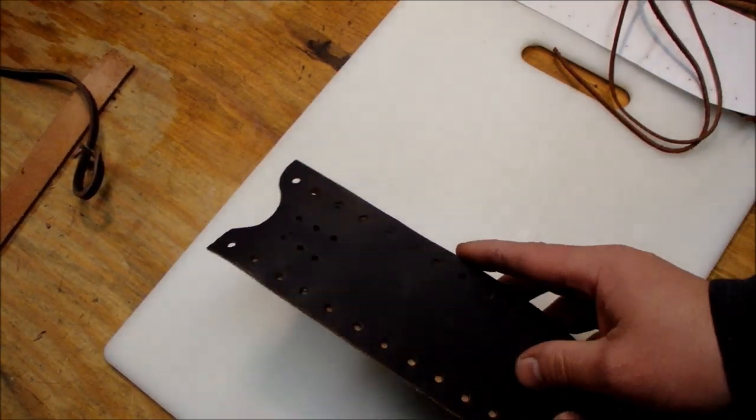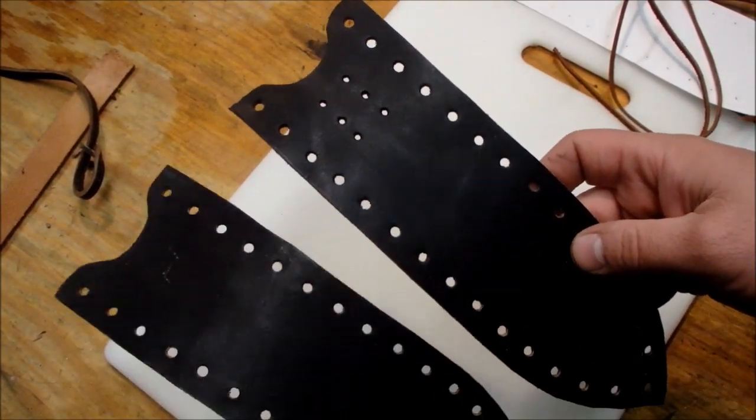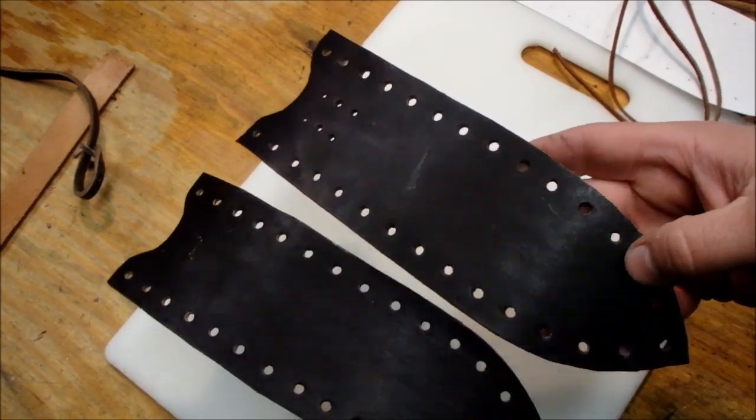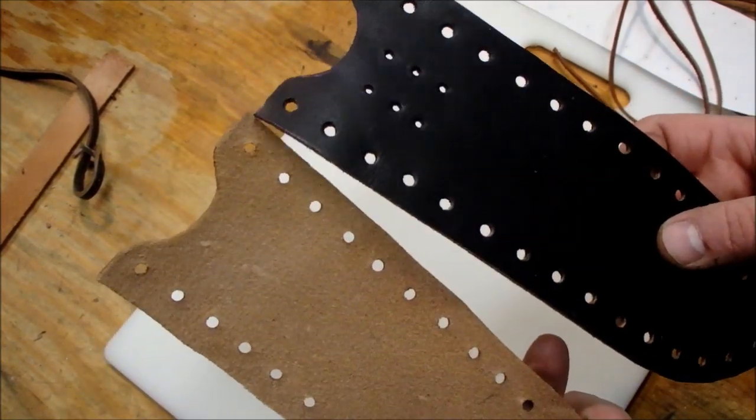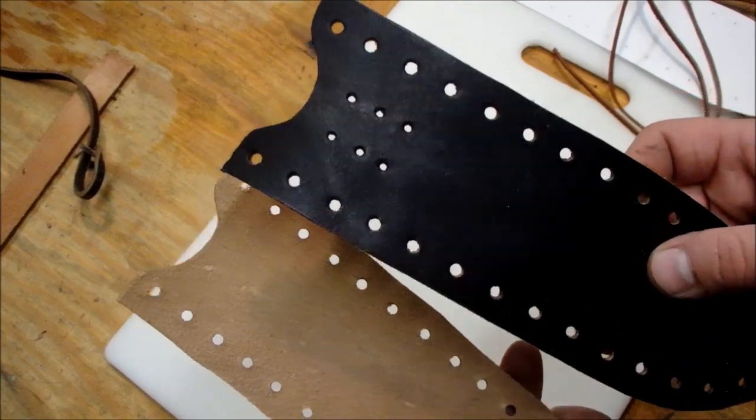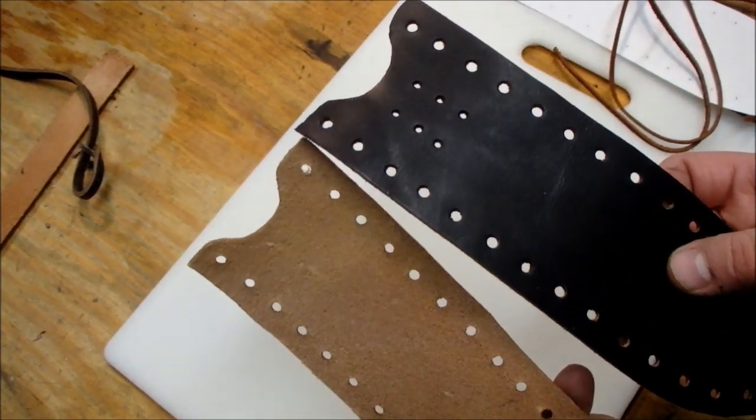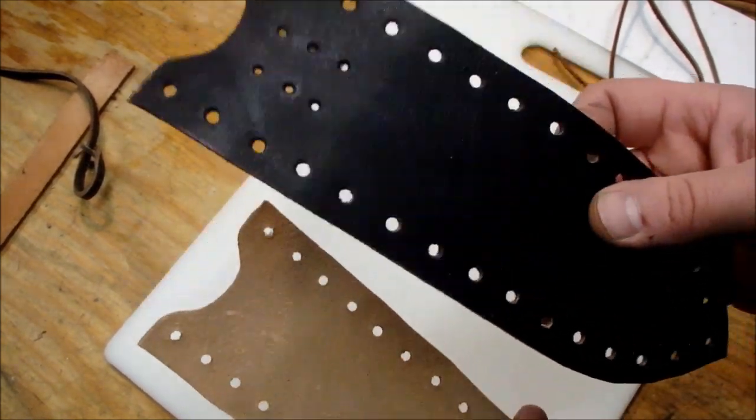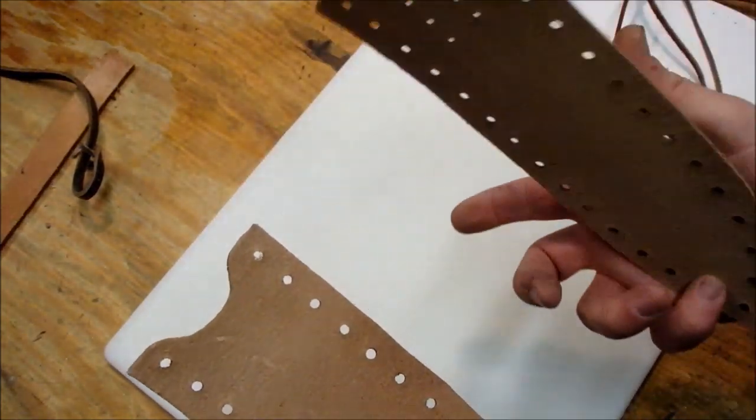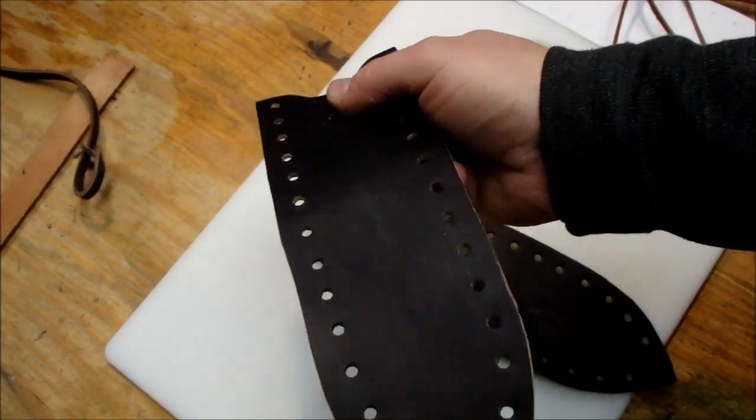Once you have the pattern kind of transferred over and cut out and everything, you can see how everything is transferred. I only have holes in one. I don't have the holes in the other. So this is going to be the back of my sheath. This is going to be the front side of my sheath.